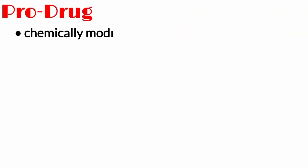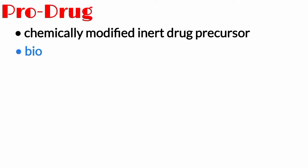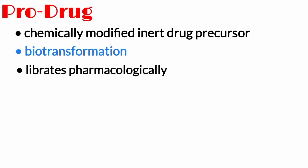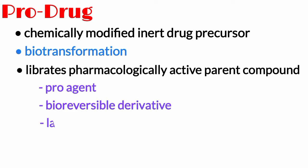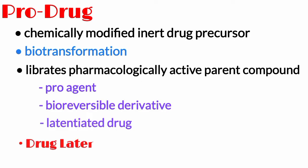A pro-drug is a chemically modified inert drug precursor, which upon bio-transformation, liberates the pharmacologically active parent compound. A pro-drug is also called a pro-agent, bioreversible derivative, or latentiated drug. The design approach is also referred to as drug latentiation.